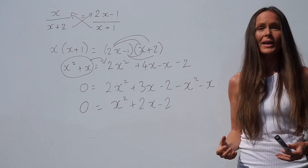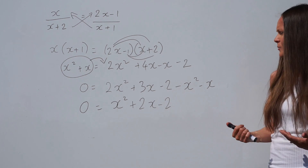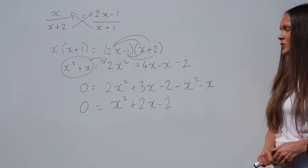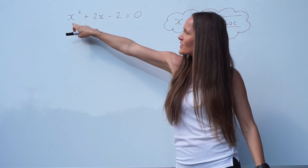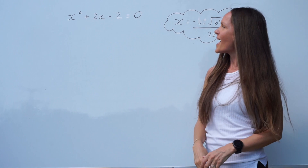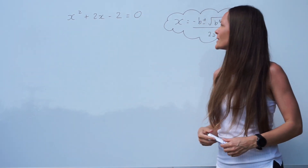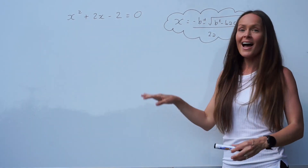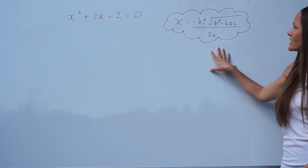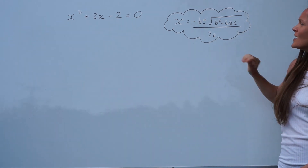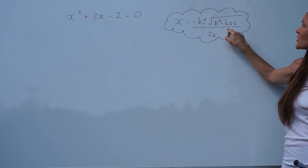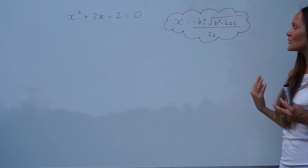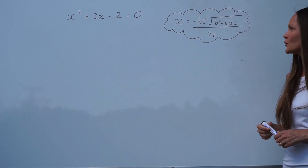So this time we have a quadratic equation to solve. I'm going to use the quadratic formula to find the values of x. The equation we're trying to solve is x squared plus 2x take away 2 equals 0. The quadratic formula is: x equals negative b plus or minus the square root of b squared minus 4ac, all divided by 2a.